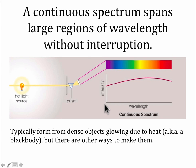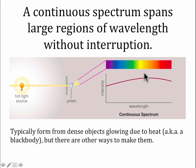We can plot this spectrum with wavelength on the x-axis — in this particular representation, red and longer wavelength is to the right — and intensity on the y-axis. For this light bulb, the graph tells us that most of the light is coming out in the reddish orange, with less as you go to the blue and less as you go to the infrared.